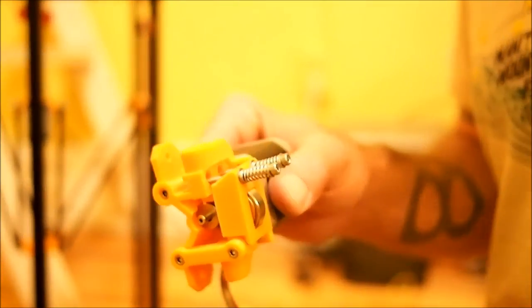Once that's tightened down, we'll take our idler, click it in there, and then click these springs over it. Then you'll get to see the finished unit.